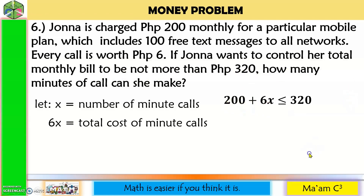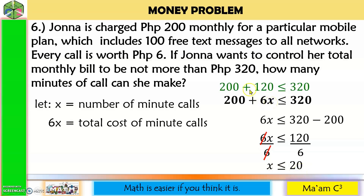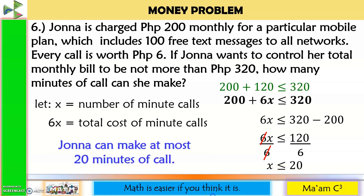Move P200 to the other side: 320 minus 200 is 120. Divide both sides by 6: 120 divided by 6 is 20. So X is less than or equal to 20. Checking with X equals 20: 6 times 20 is 120, and 200 plus 120 is 320, which equals 320. Our answer is correct. Therefore, Jona can make at most 20 minutes of call.